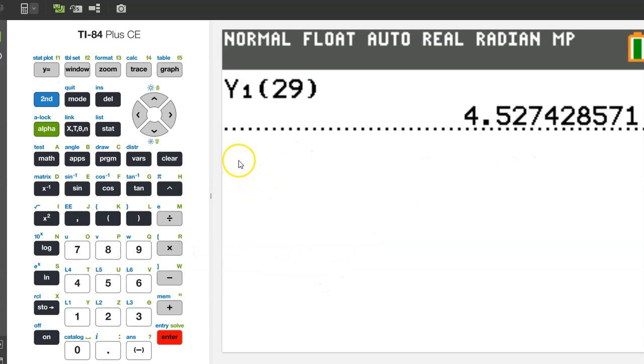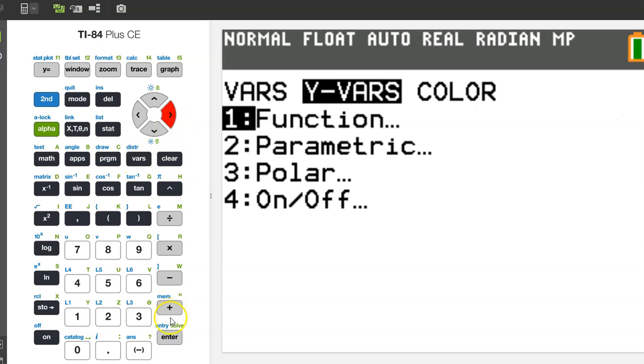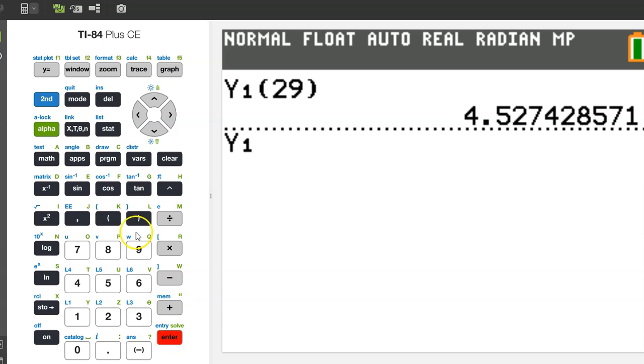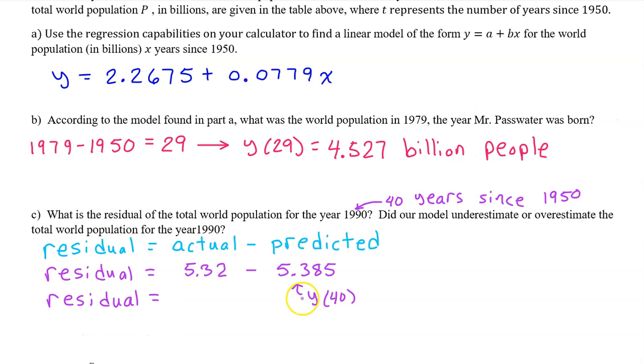So there's the actual value. How about the predicted value? Well, that will be Y at 40. On the calculator, we need Y1 at 40. So back to VARS, YVARS, enter, enter again. Y at 40 is 5.385. To avoid the risk of a rounding error here, I'm going to go back and type in 5.32 minus Y at 40, so we don't lose any of the decimals.